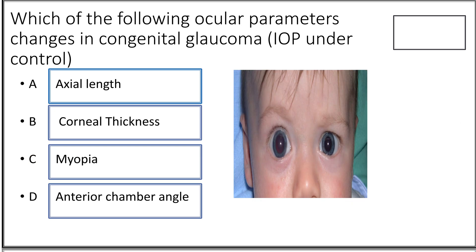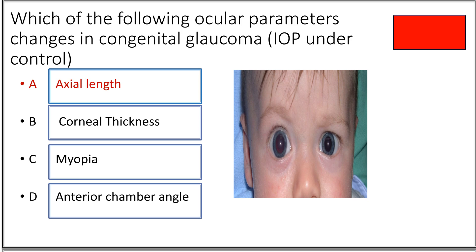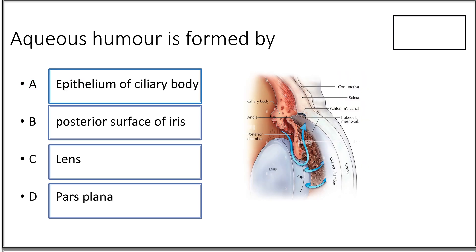Tenth question: which ocular parameter changes in congenital glaucoma — axial length, corneal thickness, myopia, or anterior chamber angle? The answer is axial length, because the sclera is very elastic and stretching of the eye occurs, thereby increasing the axial length.